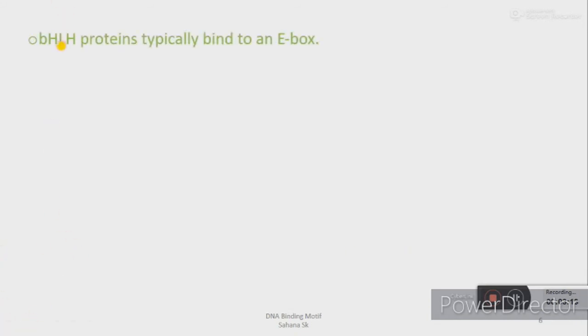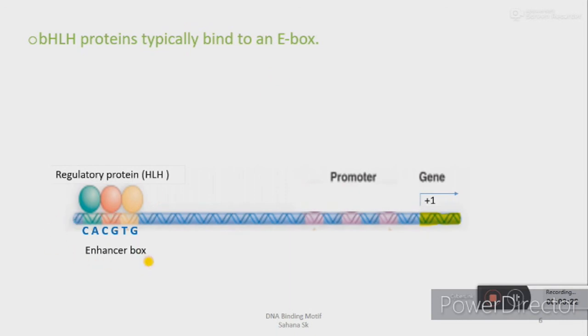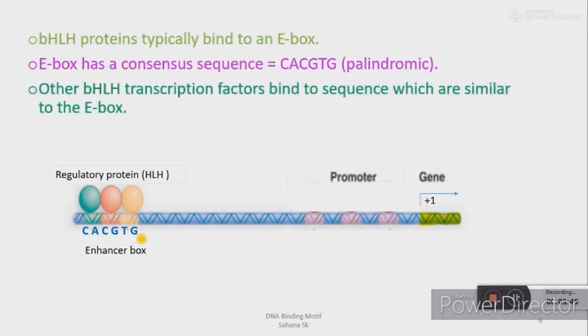Some basic helix-loop-helix proteins typically bind to an E-box. So first, what is an E-box? It is simply an enhancer box or response element on DNA found in some eukaryotes. It allows protein binding sites on DNA and also allows regulation of gene expression in various tissues. It has a conserved domain of cytosine-adenine-cytosine-guanine-thymine-guanine.